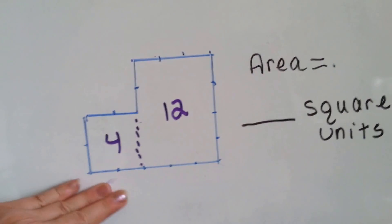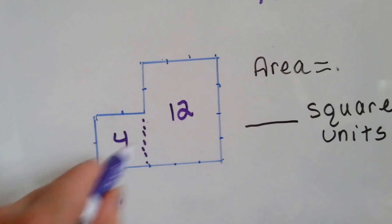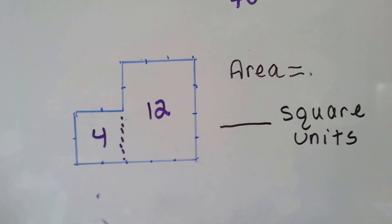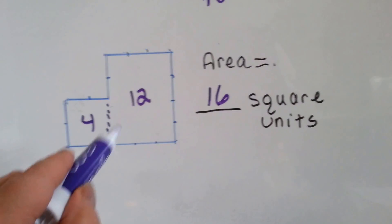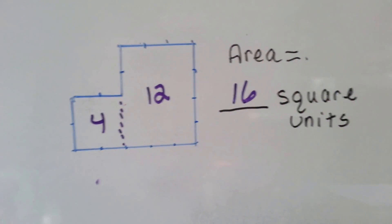And now we can add the two sections together. 4 plus 12 is? 4 plus 12 is 16. So, there's 16 square units in this shape right here.